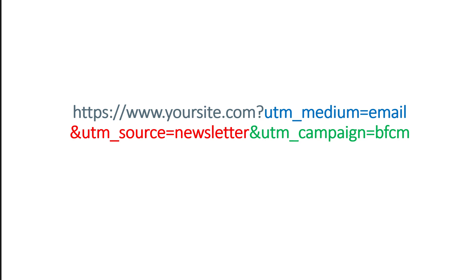UTM parameters are useful not only in email marketing — they can also apply to social media posts. For example, if you're running campaigns, you could have UTM medium as 'social', UTM source as 'Facebook', and UTM campaign as 'Black Friday Cyber Monday'. When you later look at that data in Google Analytics, you will know whether email marketing or social media was working better for the Black Friday campaign.